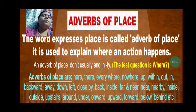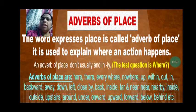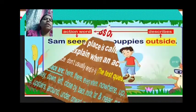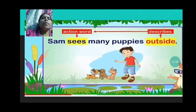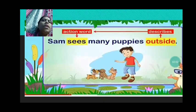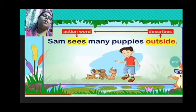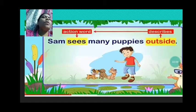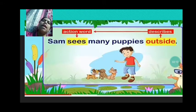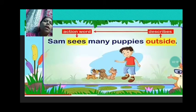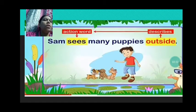These are the words which denote the adverb of place and they can be used in a sentence. Let us understand. Sam sees many puppies outside. So what is the action word — the verb? It is describing where Sam sees many puppies. He has seen them outside. So 'outside' becomes adverb of place because it tells where the action was done.